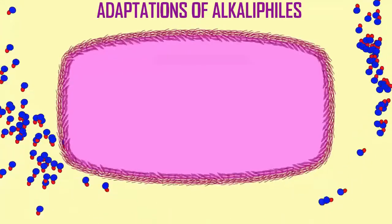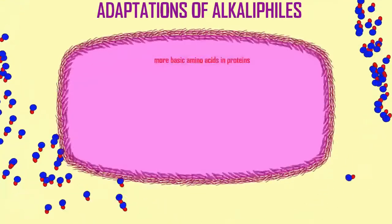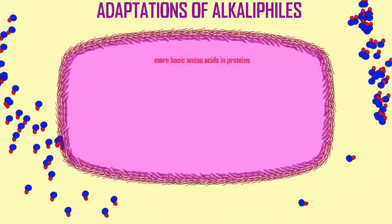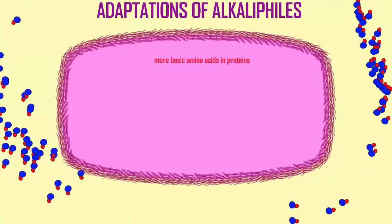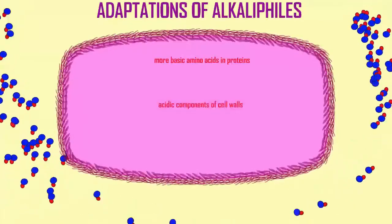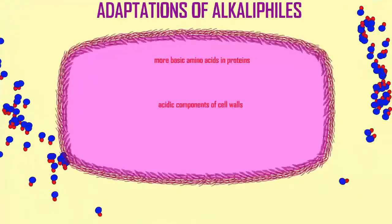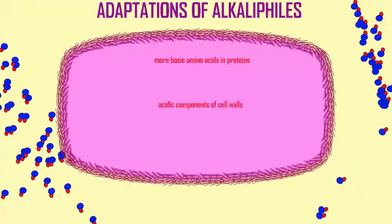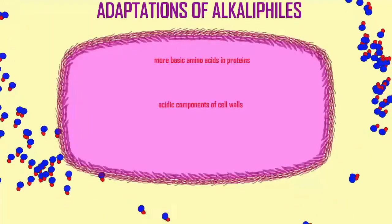Proteins are composed of varying combinations of 20 amino acids, two of which are acidic and three of which are basic. Acidophiles over-represent the number of the acidic amino acids, the glutamic acid and aspartic acid in their proteins.